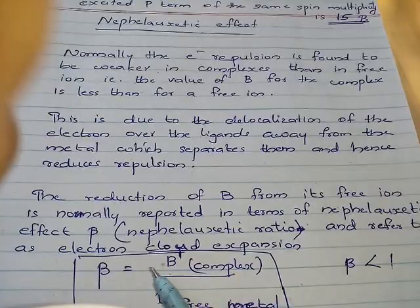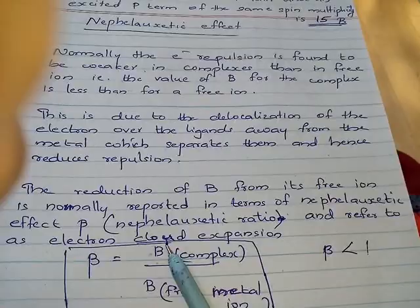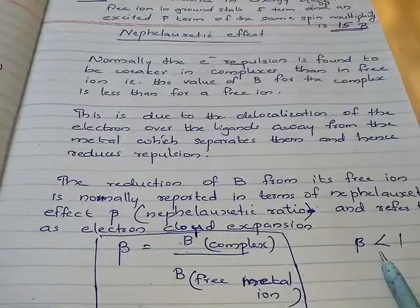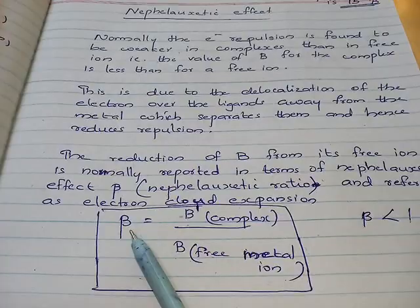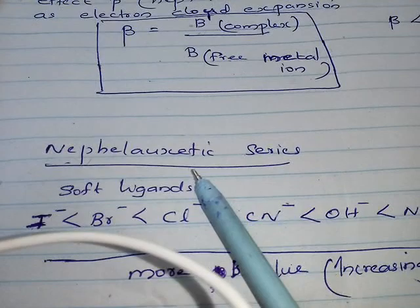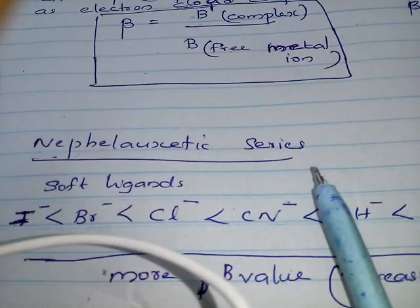The reduction of B value from its free ion value is reported in terms of the nephelauxetic ratio. That is, beta equals the B value of the complex (written as B') divided by the B value of the free ion. This beta value should always be less than 1 — that is the main condition. Beta is called the nephelauxetic ratio and is also referred to as electron cloud expansion. We should remember the nephelauxetic series, which is useful for your CSIR exam.